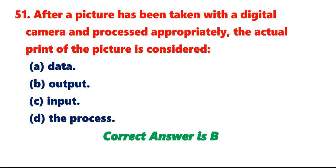Question 51: After a picture has been taken with a digital camera and processed appropriately, the actual print of the picture is considered A. Data. B. Output. C. Input. D. The process. Correct answer is B.